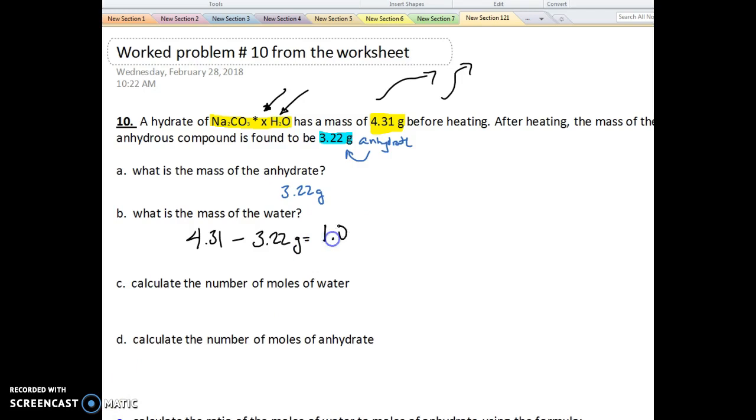we're going to subtract the mass of the hydrate from the mass of the anhydrate. And that's going to give us the mass of the water. Okay, so in this case, it's 1.09 grams of H2O. Okay, and that's an important value.